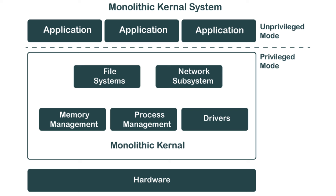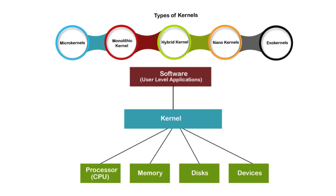The microkernel structure further refines this concept by minimizing the kernel to essential functions like inter-process communication and basic I/O control, with other services running in user space, improving system reliability and security. The modular structure allows the dynamic loading and unloading of modules, providing flexibility and extensibility, as seen in systems like Linux.